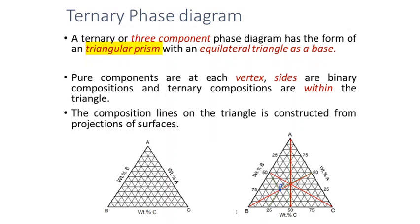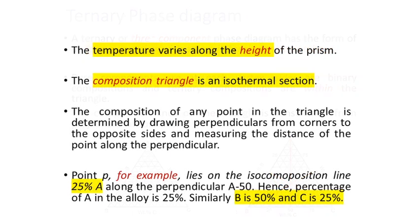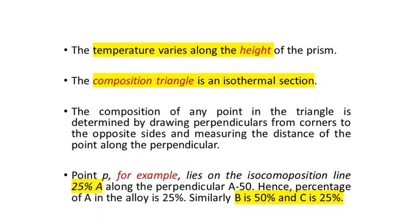To represent the temperature axis in a ternary phase diagram, since it is a triangular prism, the temperature axis runs along the height of the prism. Each cross-section of the triangle at a fixed height represents a constant temperature — an isothermal surface. Within such a section, composition can vary as single-phase, two-phase binary, or three-phase ternary regions.